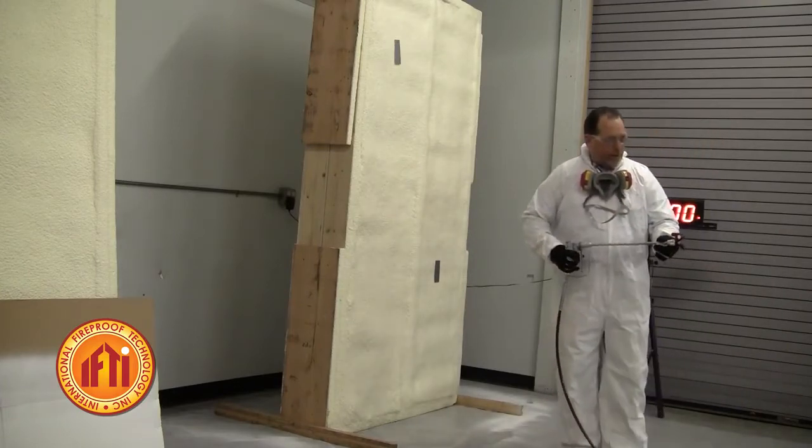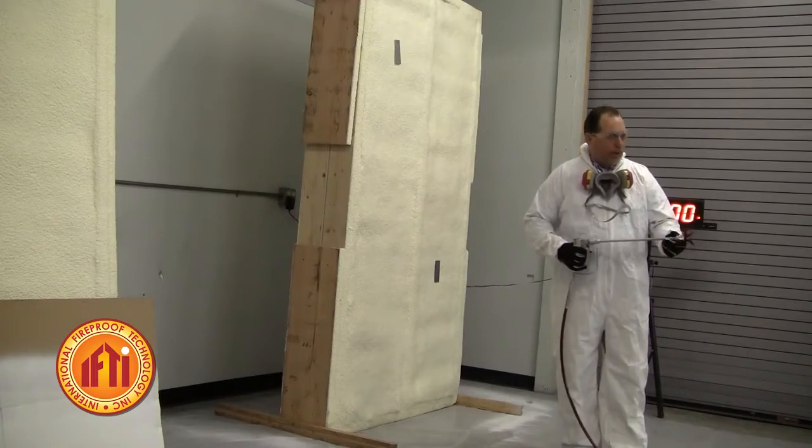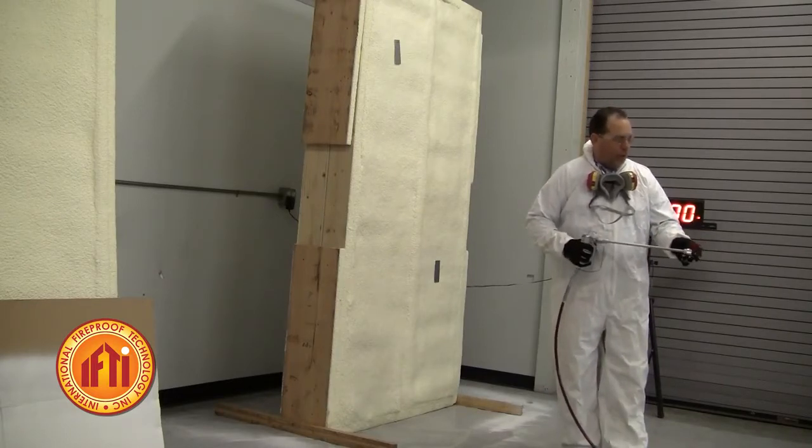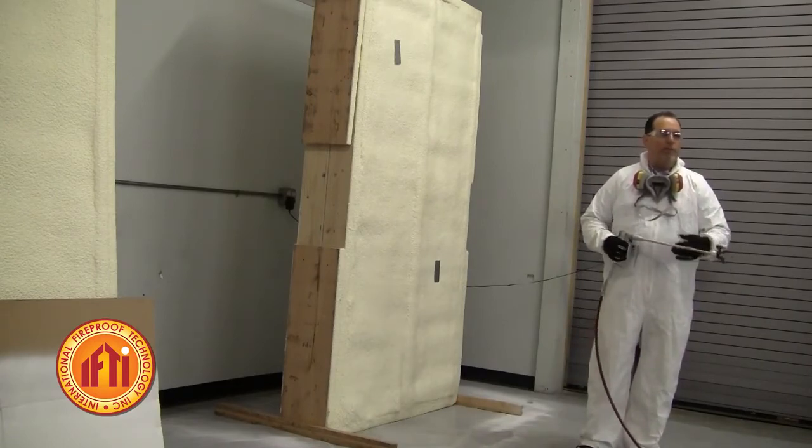In your standard application, you're going to adjust accordingly to the surfaces you're working on. Now, in this application here, we're looking at getting a mill thickness of about 12 mills dry, which is 18 mills wet.